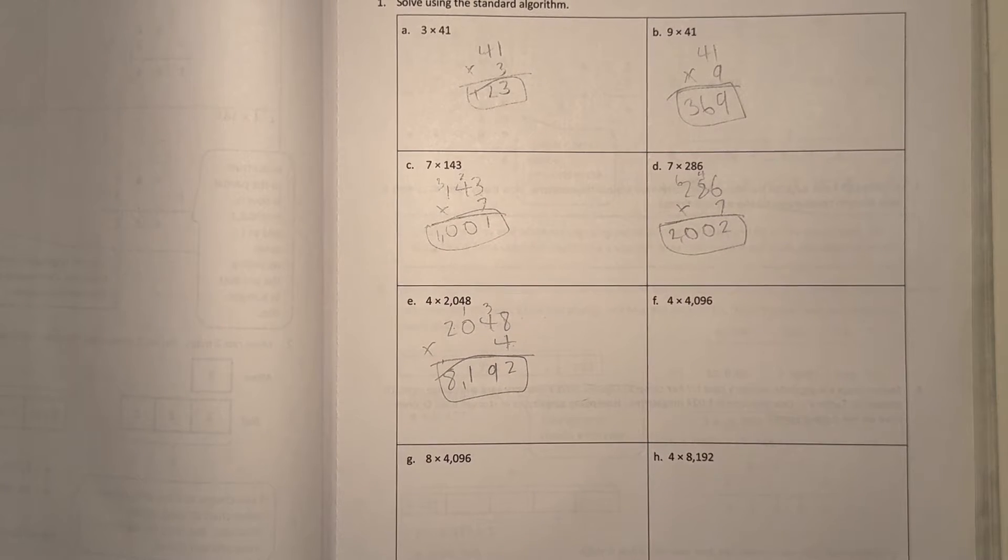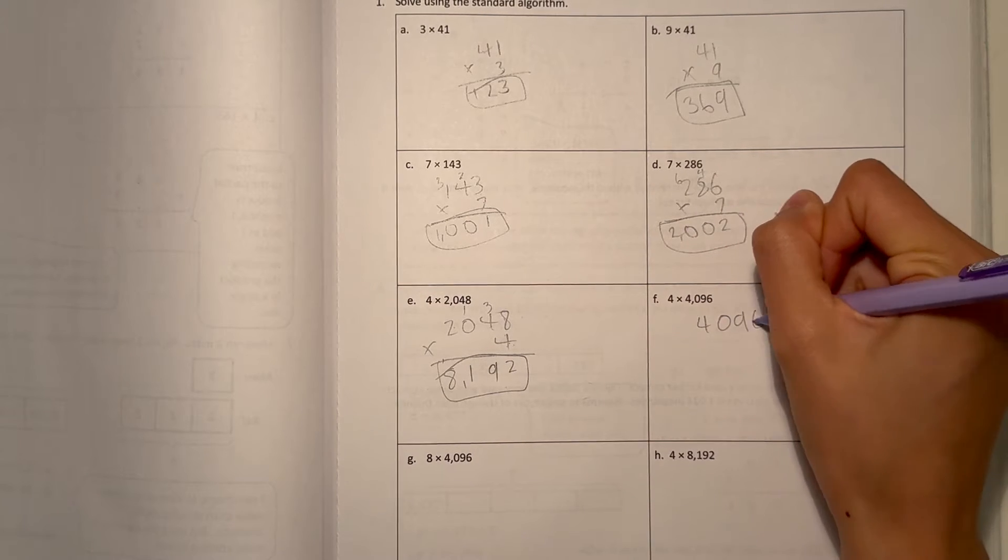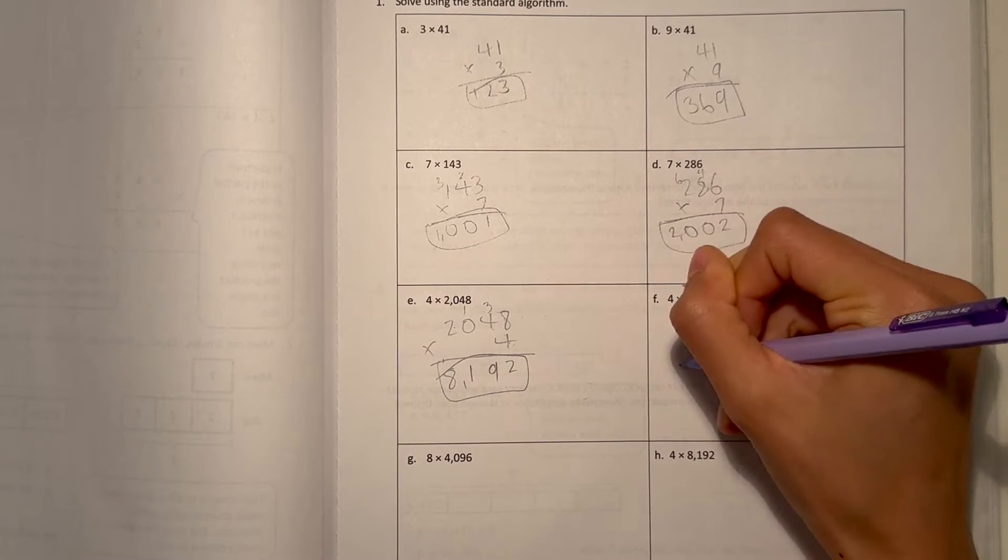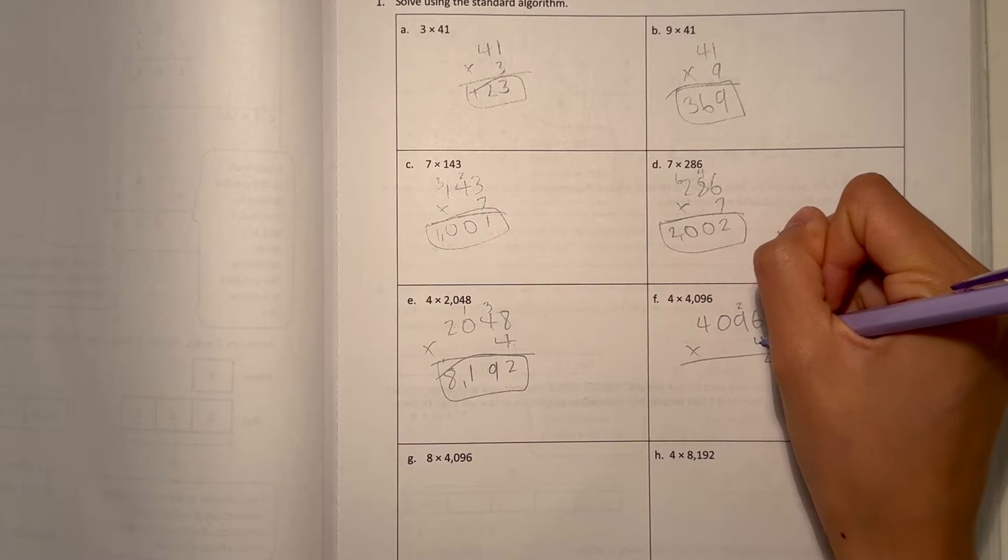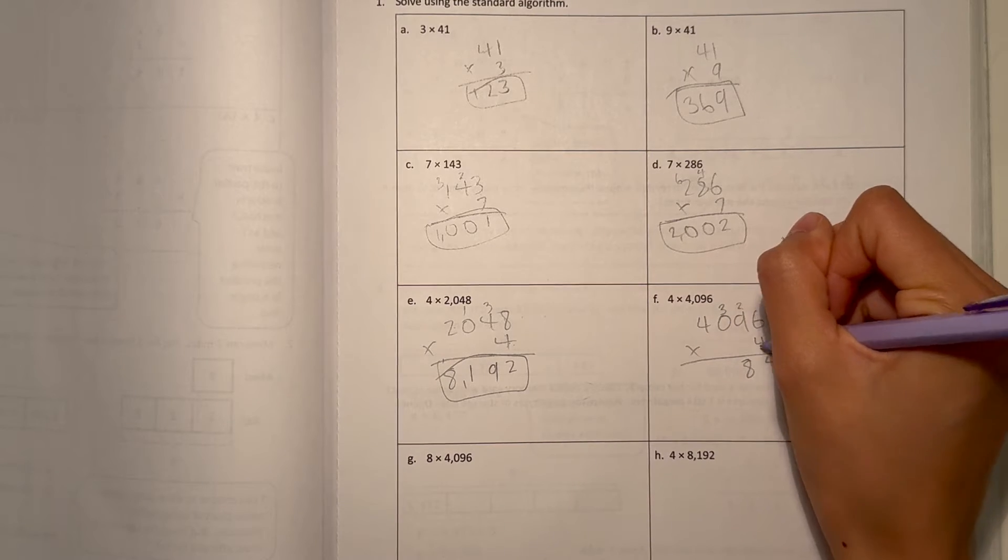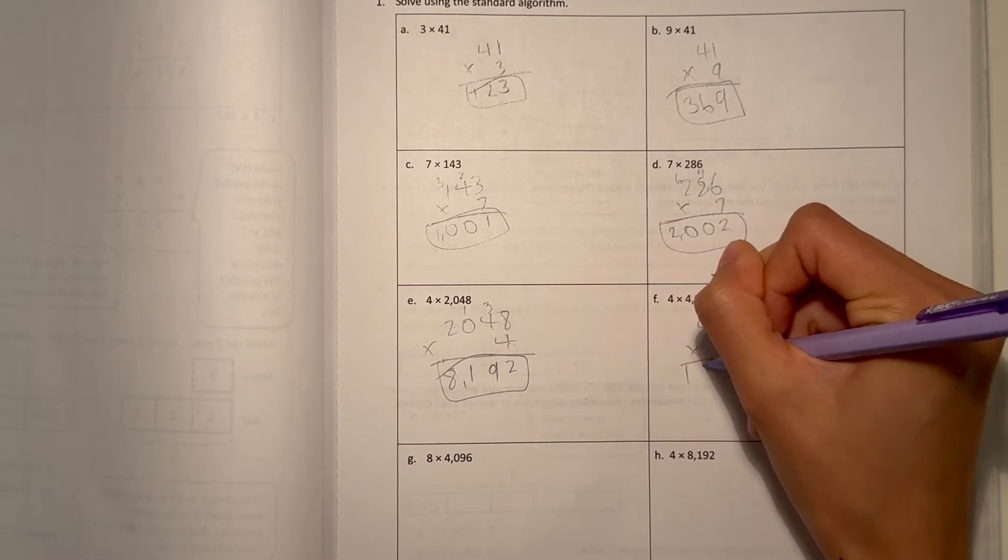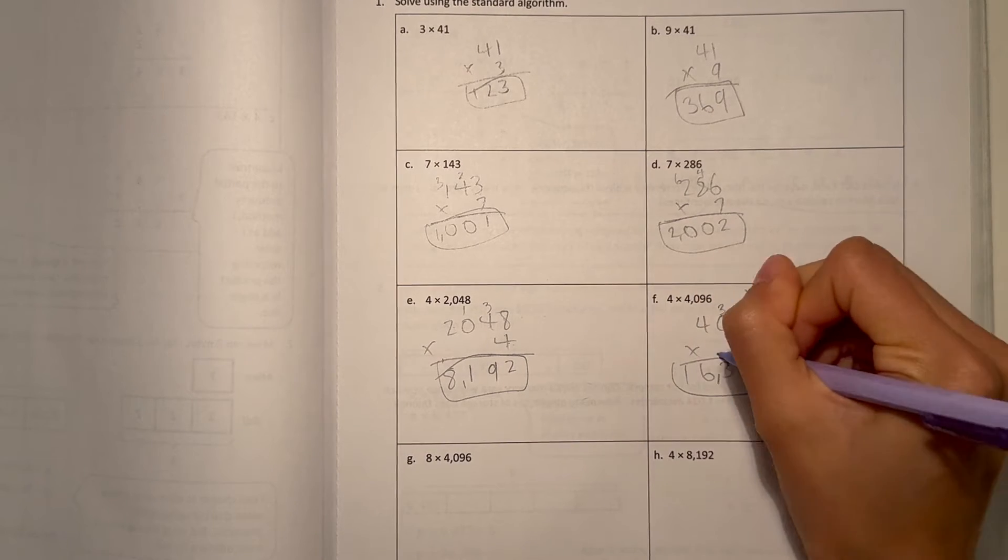And for F, 4,096 times 4. 6 times 4 is 24. 9 times 4 is 36, plus 2 is 38. 0 times 4 is 0, plus 3 is 3. And 4 times 4 is 16. So our answer is 16,384.